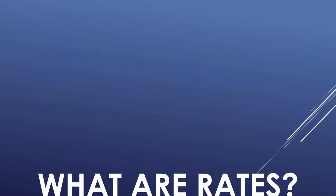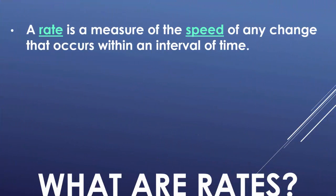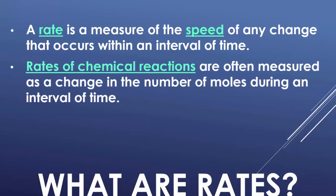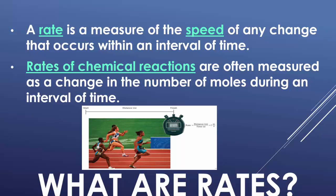So what are rates? A rate is a measure of speed of any change that occurs over an interval of time. The rate of a chemical reaction is often measured as a change of number of moles during that interval of time. If you think of rate, you've definitely seen it before — like miles per hour. That is a rate a car can go.